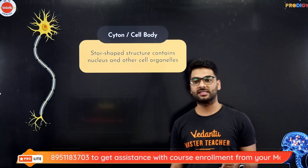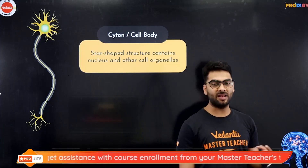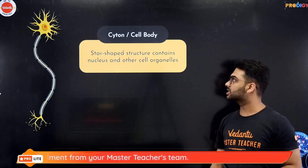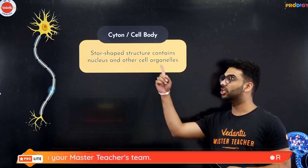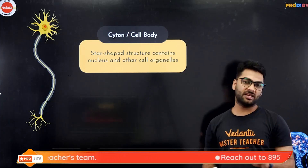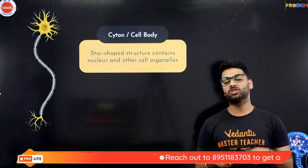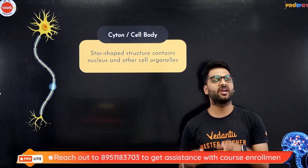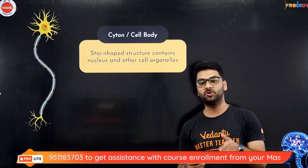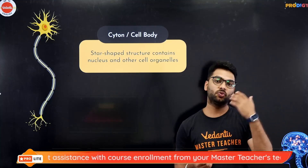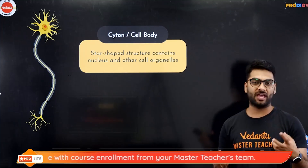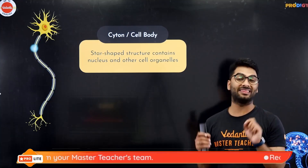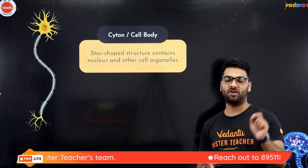The neuron is the longest cell of the human body, made of a cell body also called the cytone, and the axon. The cytone is a star-shaped structure which contains the nucleus and the cell organelles. Neurons do not have centrioles. The centriole is the part of the cell that initiates cell division, and that is why neurons can never divide. Because neurons can never divide, any damage to a neuron has a permanent and very significant impact on the body.